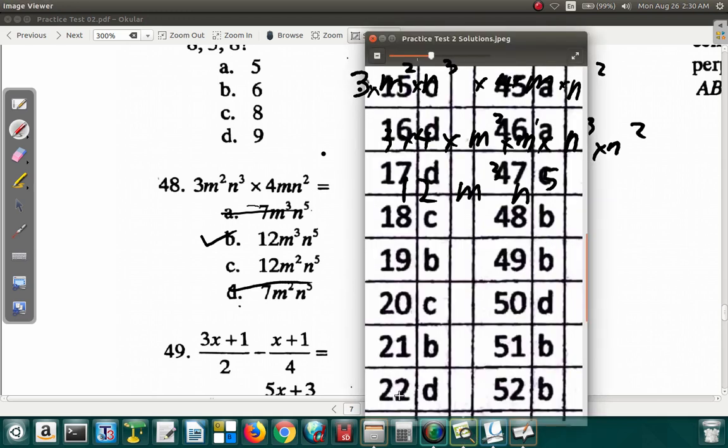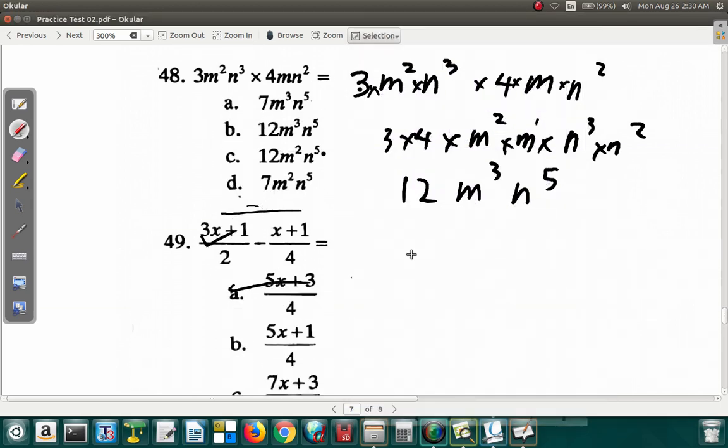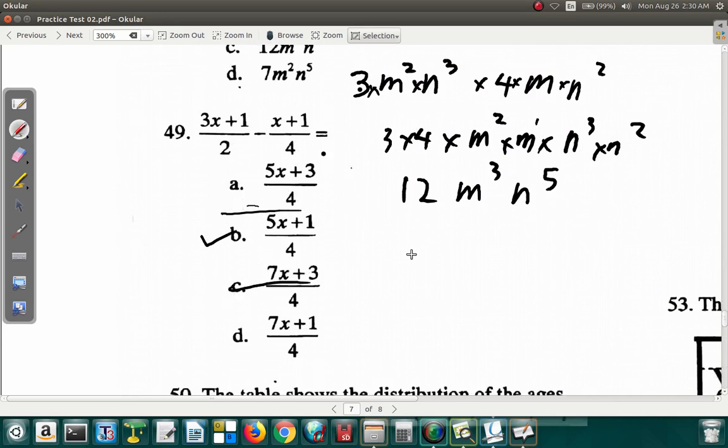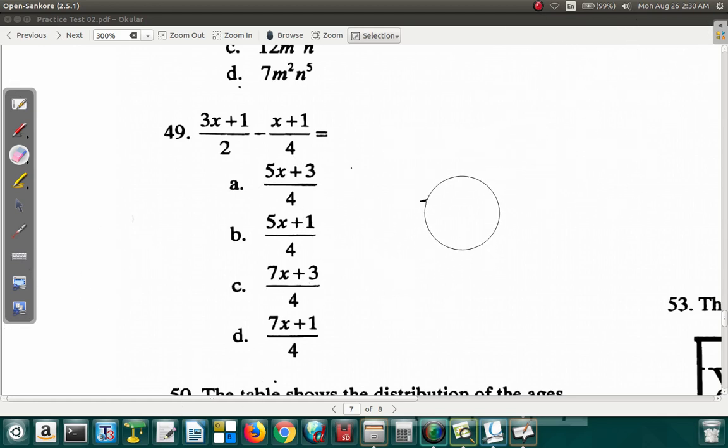So you can see 48 is b. 48 b. Alright. 49. Let's get rid of these rough work.